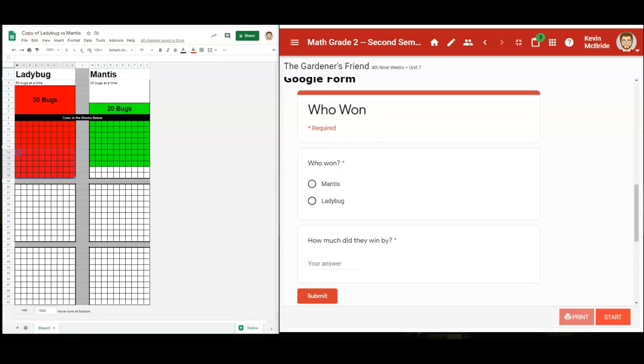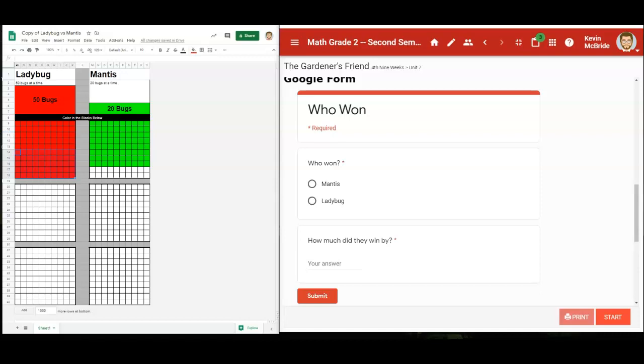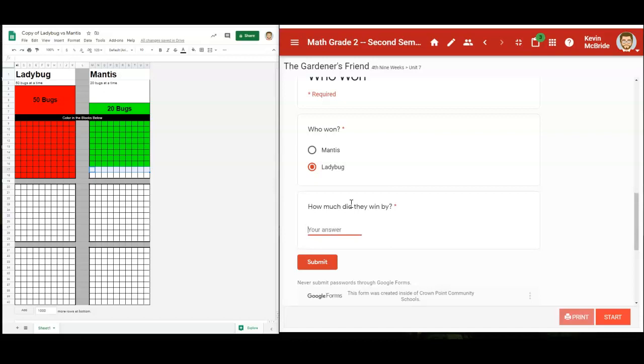The next thing you're going to do is come down to this Google form and you're going to say who won. The ladybug won this time. How much did they win by? They won by 20 points. I have 10 in this row and 10 in this row, so that is 20 total.